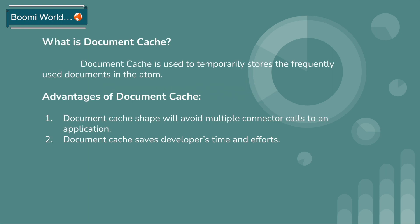Document cache is used to temporarily store frequently used documents in the atom. The main advantage of document cache is to avoid multiple connector calls to an application within a single process. Document cache also saves developers time. Document cache must contain at least one index value, and every index value contains at least one key value. The key and index value represent the primary key of the profile.